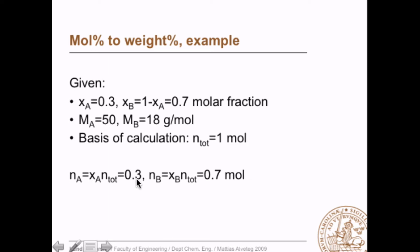Simply 0.3 times 1, that's 0.3 mole, and n_B, that's 0.7 times 1 is 0.7 mole. And now we can calculate how many grams we have. Number of moles times molar mass, so 0.3 times 50, that's 15, and 0.7 times 18, that's 12.6. And now we can calculate the weight fraction, simply as 15 divided by 15 plus 12.6 and that's 0.54, 54 weight percent.